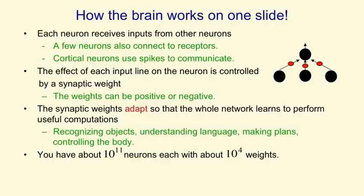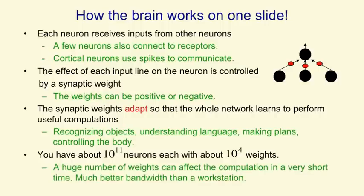You have about 10 to the 11 neurons, each of which has about 10 to the 4 weights. So you probably have 10 to the 15, or maybe only 10 to the 14, synaptic weights. A huge number of these weights — quite a large fraction of them — can affect the ongoing computation in a very small fraction of a second, in a few milliseconds. That's much better bandwidth to stored knowledge than even a modern workstation has.